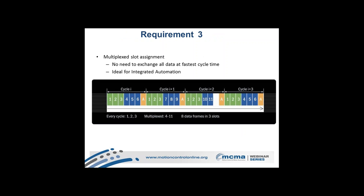The value of having one single network for all automation is the ability to handle fast and slow components together. Fast components like drives or encoders need to be read every cycle, while slow components like temperature or pressure sensors don't. Using multiplexing, you can have components communicate every cycle while others share slots — for example, multiplexing eight nodes using only three slots on the network. This keeps the network highly efficient.